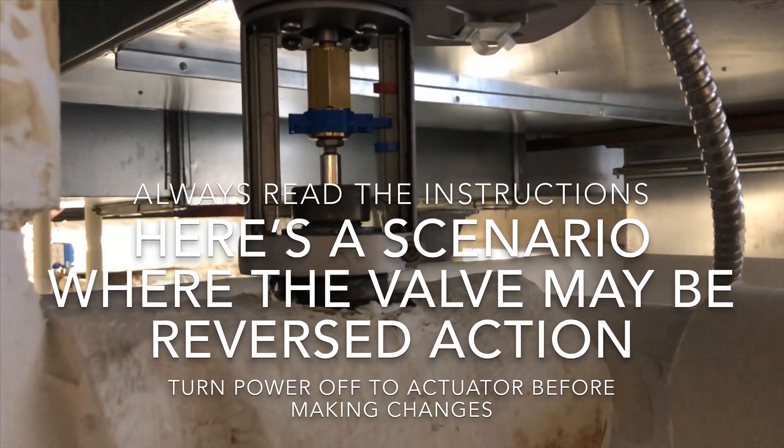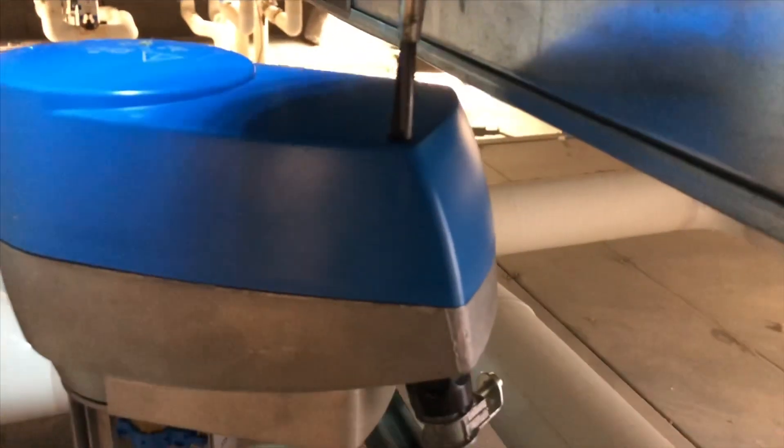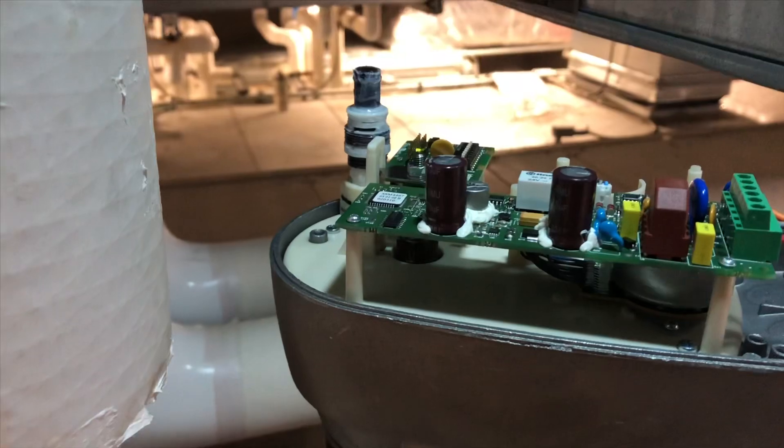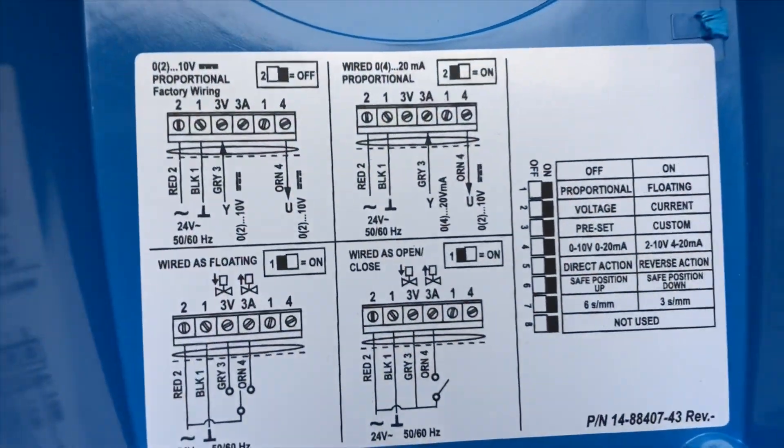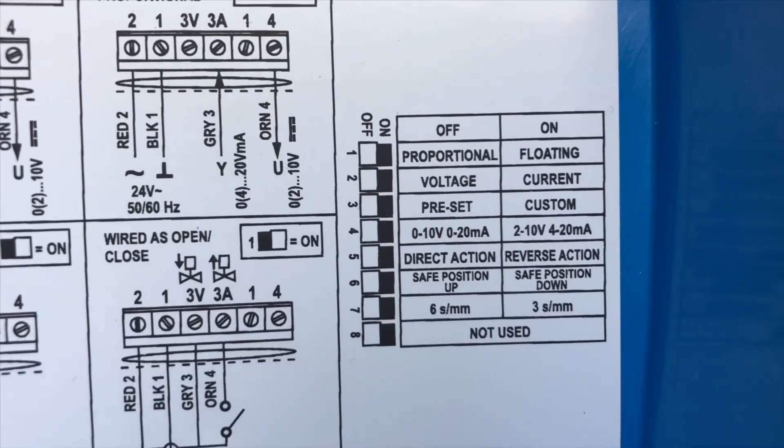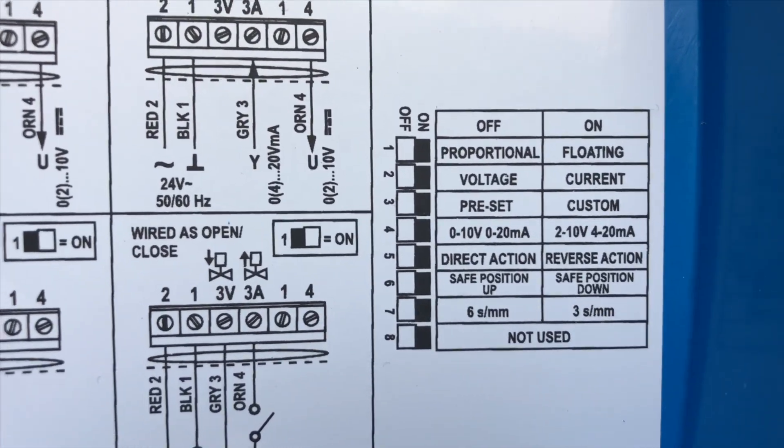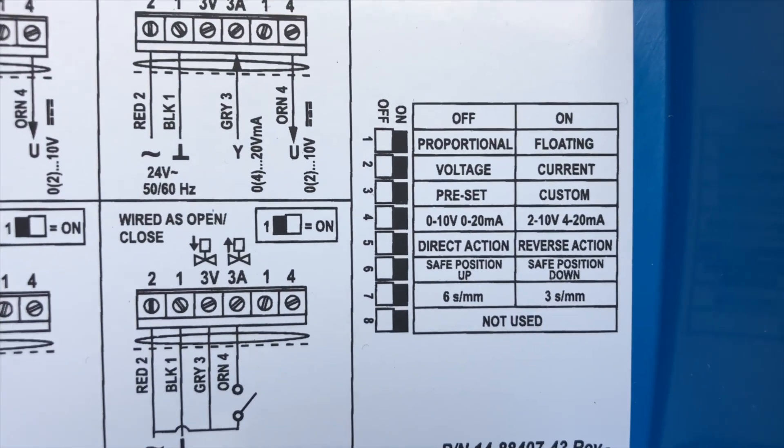We'll take the cover off the top and go from there. We have to gain access to our top of our actuator so we can take these screws out. We'll take our cover off. We got the cover taken off of our actuator. We need to reverse our dip switch here where it says direct action or reverse action.